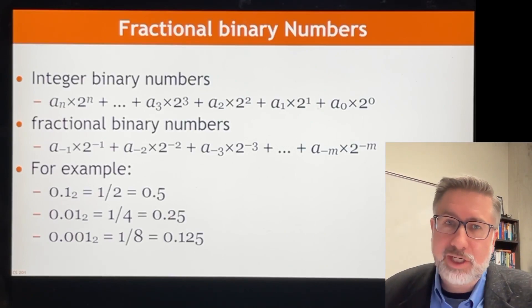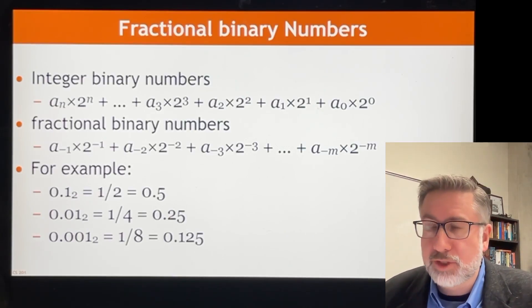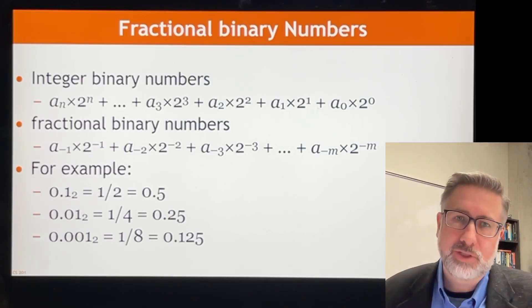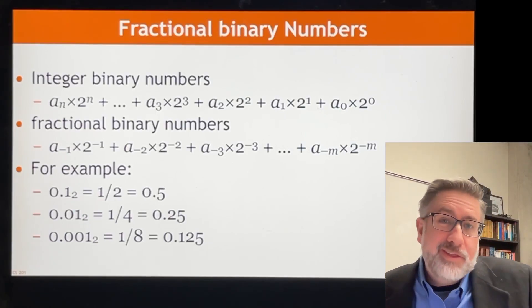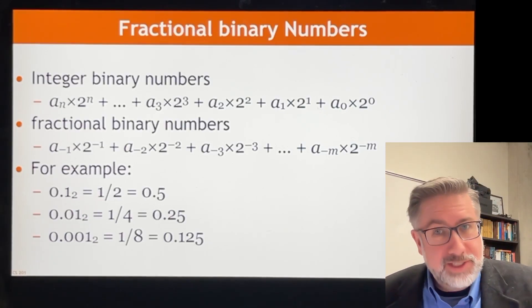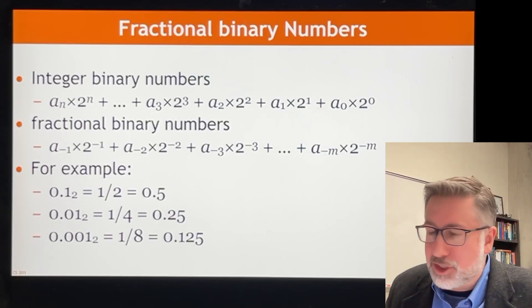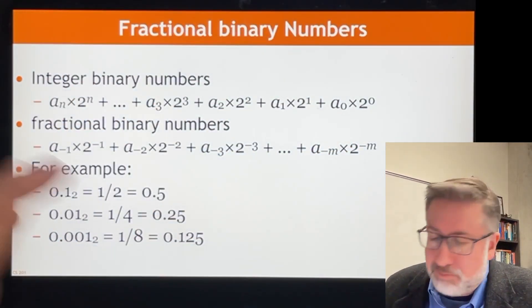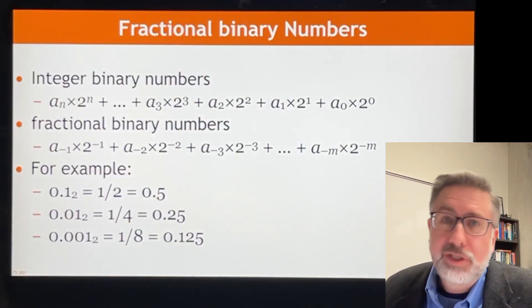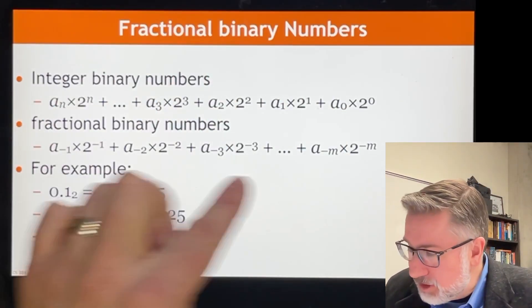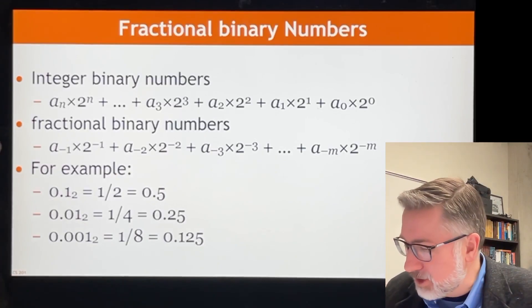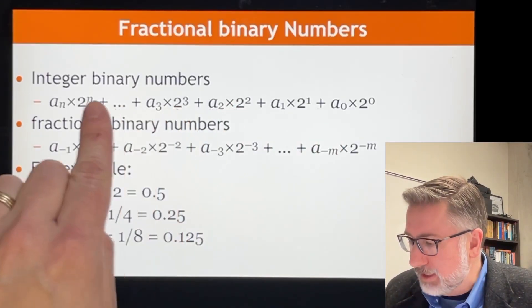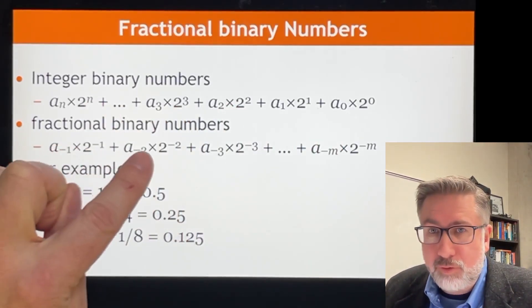In binary, 7 is 1 times 2 to the 2 plus 1 times 2 to the 1 plus 1 times 2 to the 0. Then the question becomes what do you do with numbers that are less than 1? Well these are now fractional. It's easy to extend this kind of a formula from increasing powers of 2 back past 0 to decreasing powers of 2.